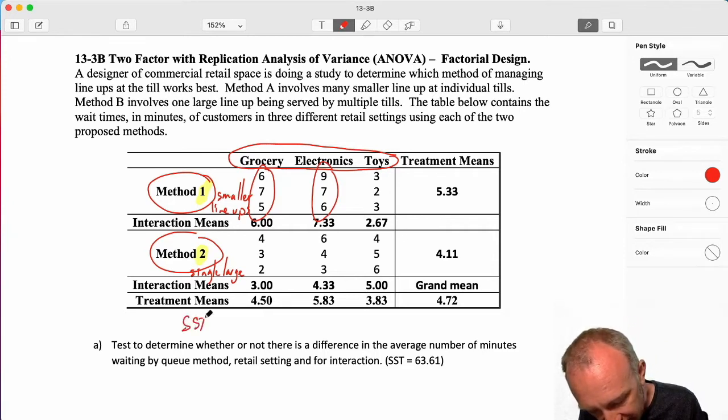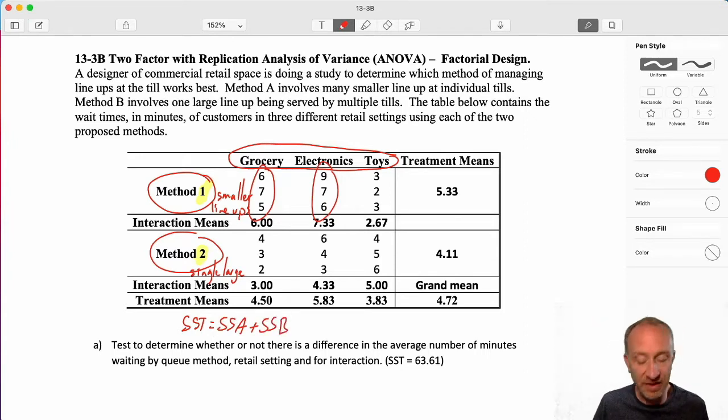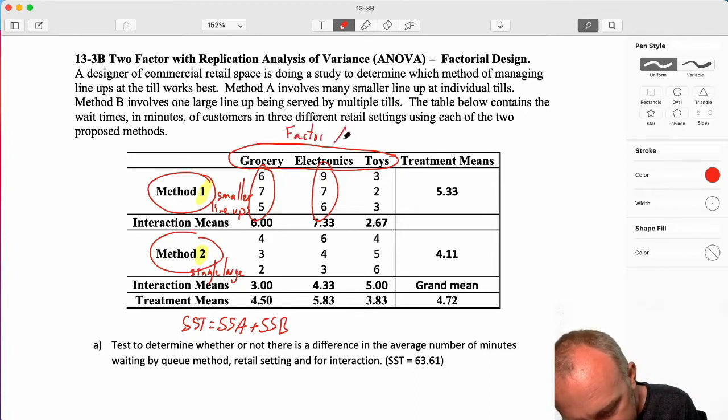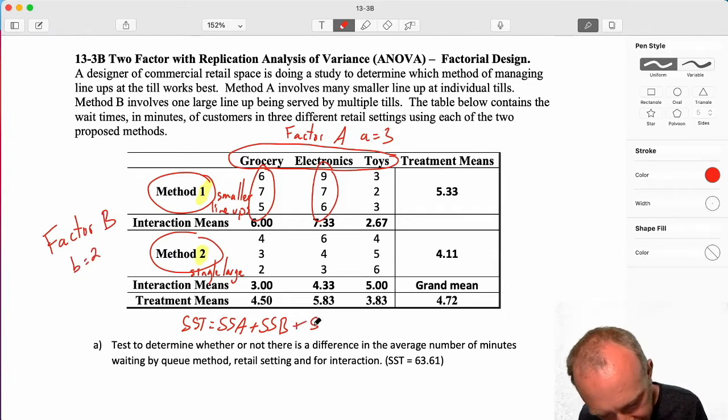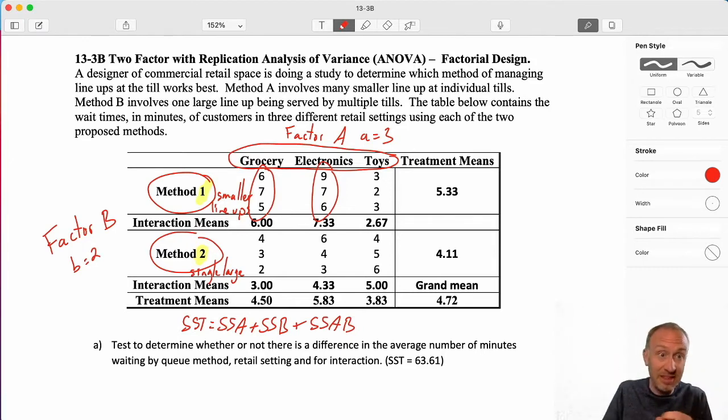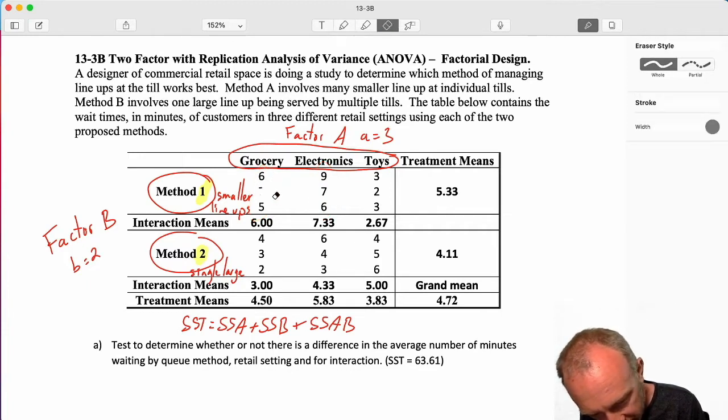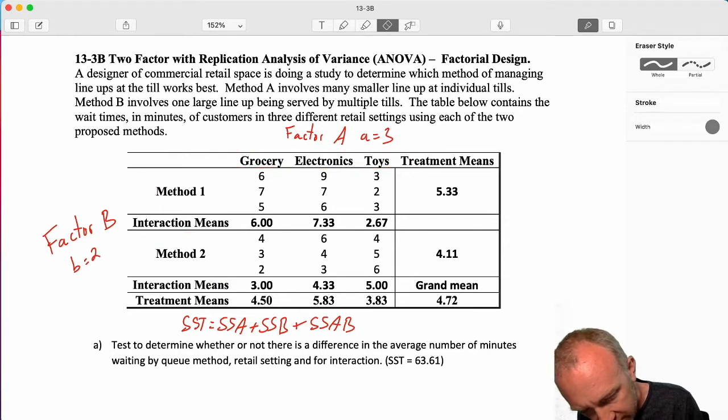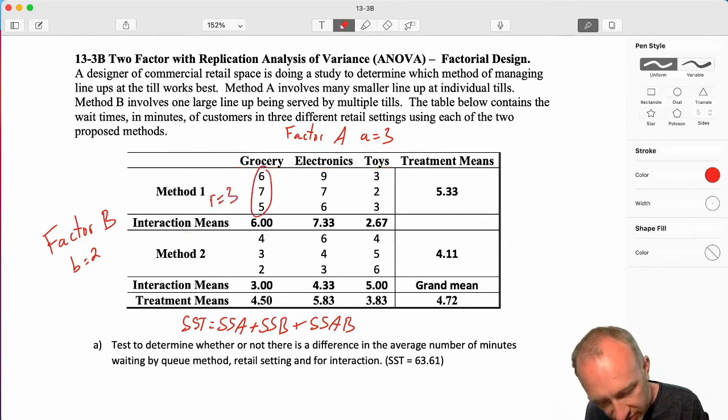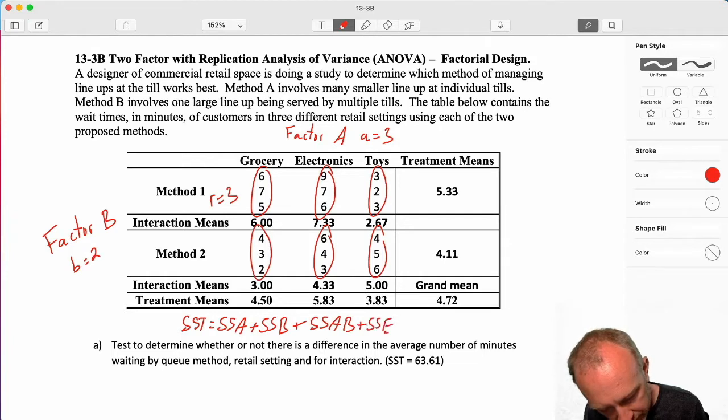So let's see, do we have evidence to show that there's any difference across the retail setting, any difference in time across these two methods, and of course we will test for interaction. Whether or not we have evidence to show a difference in a combination of a particular method with that particular retail setting. So we are taking our total variation, and we're splitting it up into differences across treatments in factor A. We'll call this one factor A, and we have three treatments.